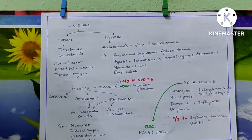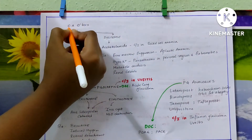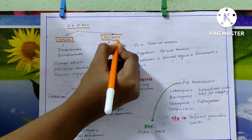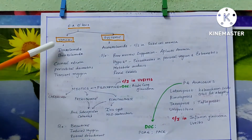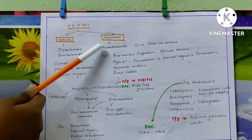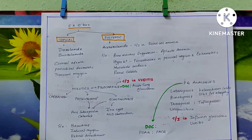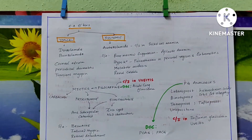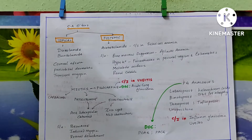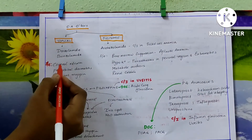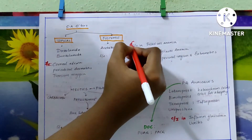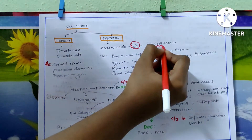The third drug in the decreased aqueous production group is C — carbonic anhydrase inhibitors, specifically type 2. These have topical and systemic forms. Topical includes dorzolamide and brinzolamide. Systemic includes acetazolamide. Side effects of dorzolamide and brinzolamide include corneal edema, periorbital dermatitis, and transient myopia.